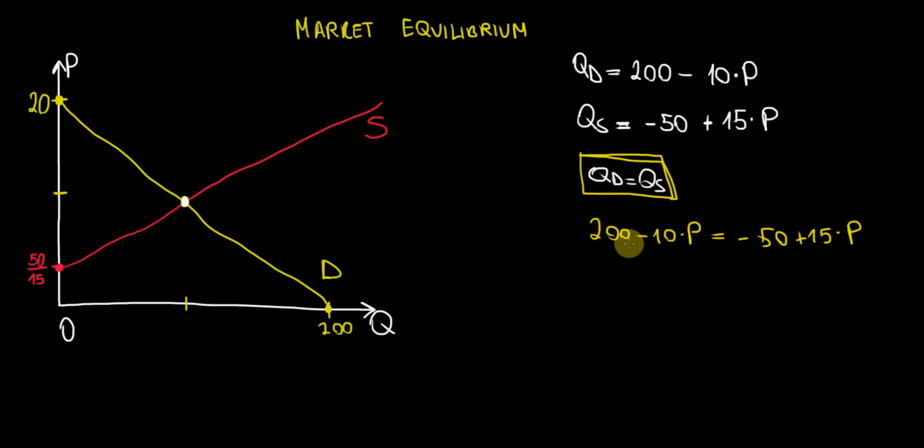Now let's take the numbers on one side. So we have a minus 50 over here. Let's take it to the left side which becomes 200 plus 50 and that's going to be 250 and here let's take the minus 10P on the right side. So we will have 15P plus 10P which is equal to 25 times P.